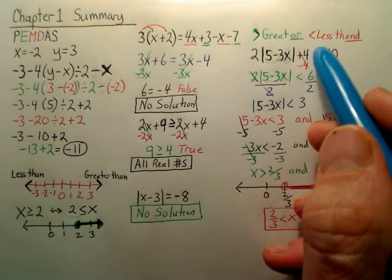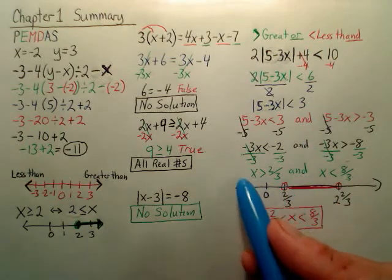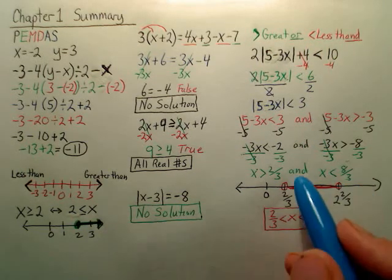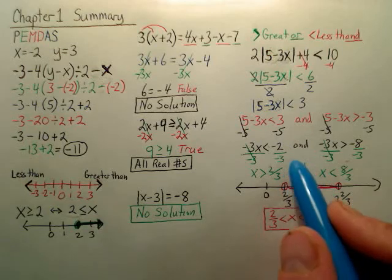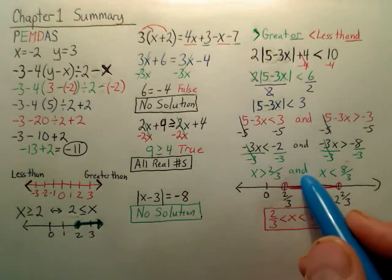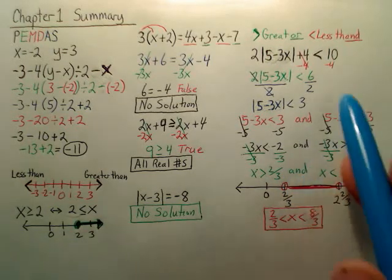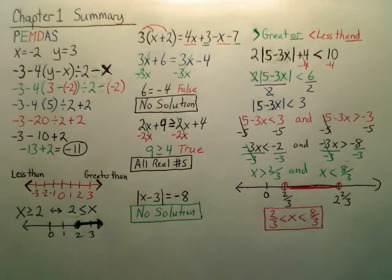Now right off the bat, if this was a greater than, right off the bat our graph should be going out. And all your answer would do is have an or right here. You'd stop and have the word or. But this is an and. This is a very brief summary of chapter one.